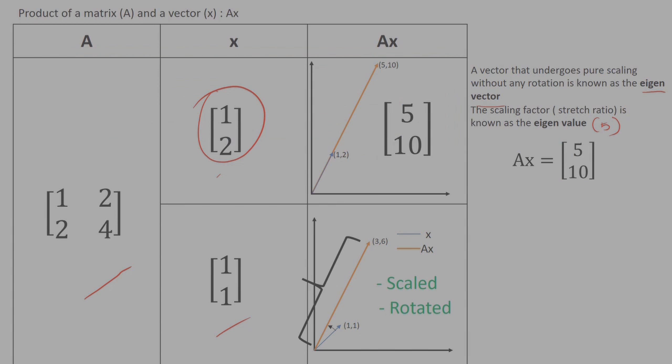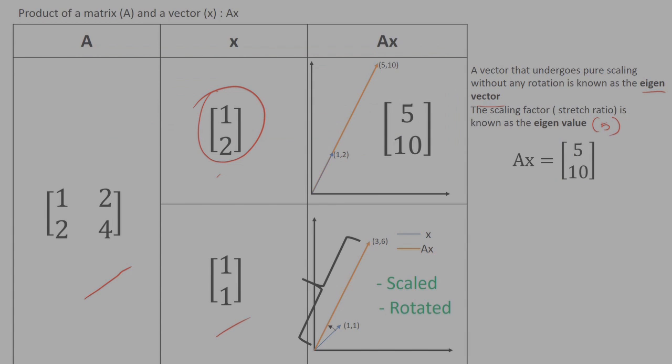Let me dig this further. We know that Ax equals [5,10] for this case. Let me take 5 out of this equation.